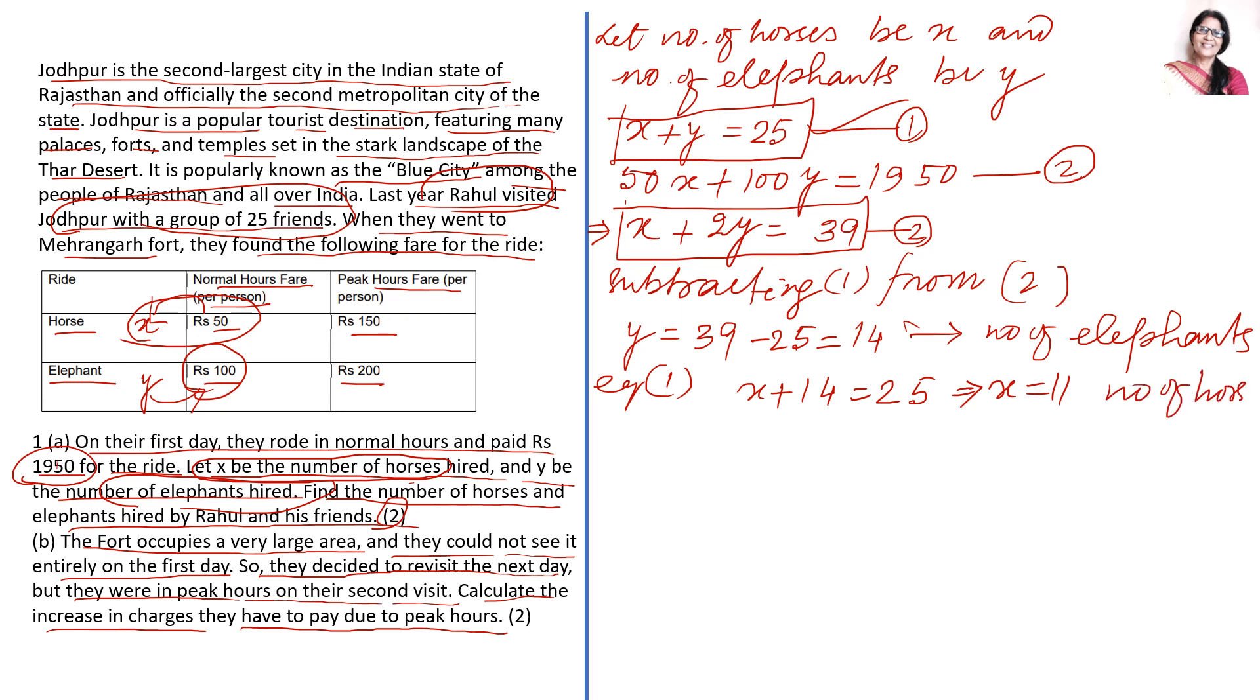So part 1 we have finished. You can write the statement: number of horses is 11 and number of elephants is 14. Now, coming to part 2.